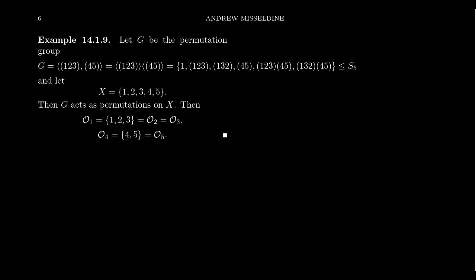And then lastly, what about 4? Where can 4 go? The identity sends 4 to itself. (123) sends 4 to itself. (132) sends 4 to itself. (45) will send 4 to 5. And that's it. So 4 goes to itself, it can go to 5, and that gives you the orbits for 4 and the orbits for 5.